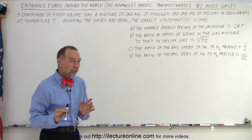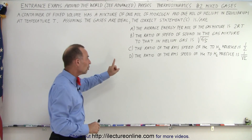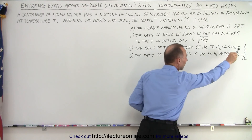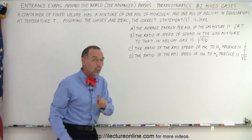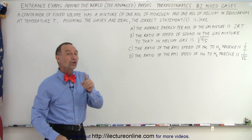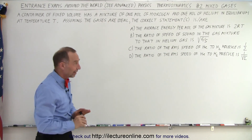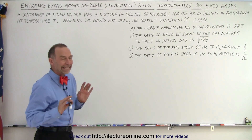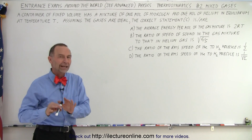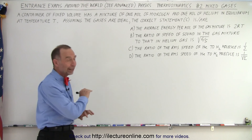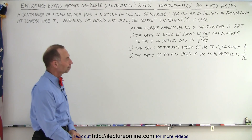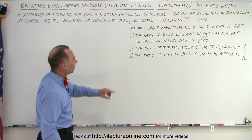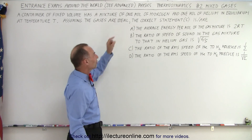If you take a close look at C and D, notice that they have the exact same wording but different numbers at the end, which means only one or the other can be correct — they cannot both be correct at the same time. Of course they could both be wrong, but if you pick one of them, the other is automatically false.